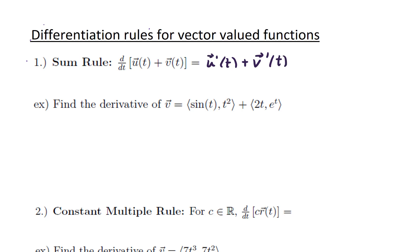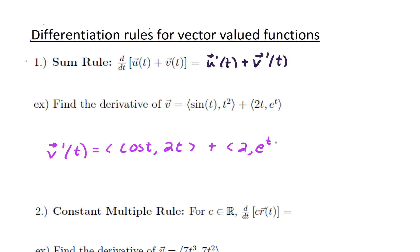Let's find the derivative of function v, which is (sin t, t² + 2t, eᵗ). The derivative would be the derivative of the first component, which is cos t, the second component 2t, and the third has derivative 2eᵗ. Adding those two pieces together, we have cos t + 2 in the first component, and 2t + eᵗ in the second component.